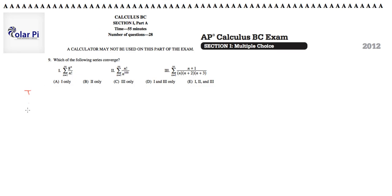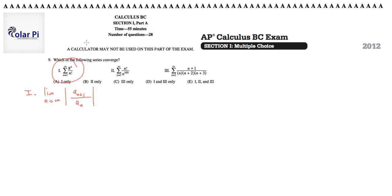Part one gives us this series, and it looks like we can check it using the ratio test. Remember, the ratio test says: if the limit as n goes to infinity of the absolute value of the n plus first term divided by the nth term is less than one, then the series converges. If it's greater than one, the series diverges, and if it's equal to one, the test is inconclusive, so you'd have to do another test.